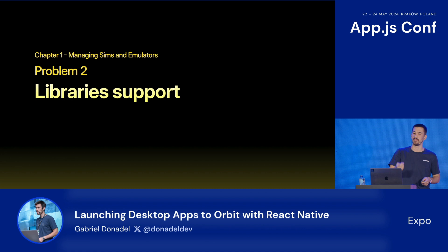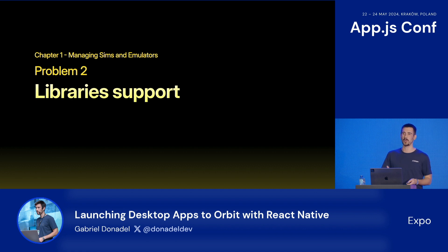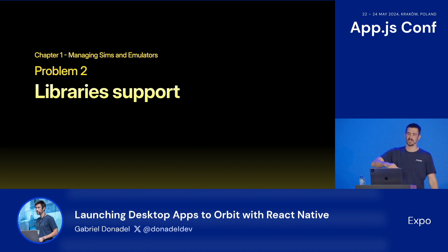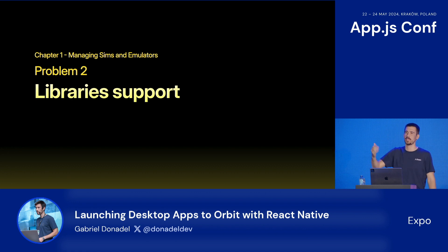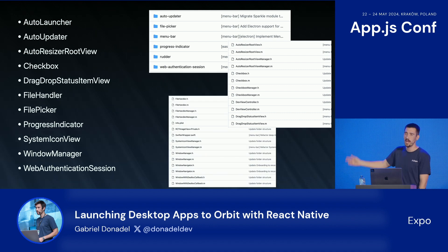When you start to implement all those features, you end up finding some peculiarities. The reality is that out-of-tree platforms are just not as popular as React Native for Android and iOS. And because of that, you won't really find compatible libraries for most things that you want to do. This is likely the biggest downside when it comes to out-of-tree platforms. From simple checkboxes, to using a navigation router system, or an auto-updating framework — you will just need to build things yourself. Here are some of the modules we had to create for Orbit, and as you can see, we had to implement some pretty basic stuff.